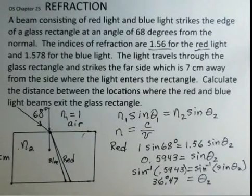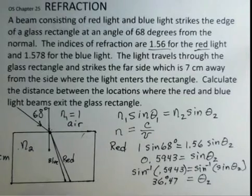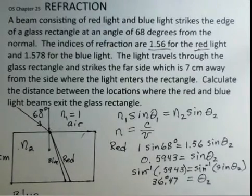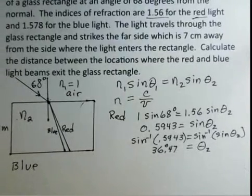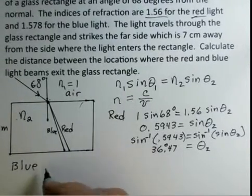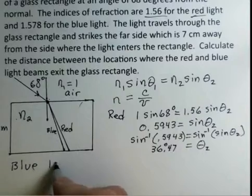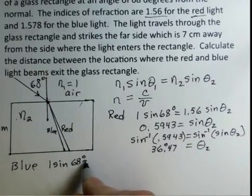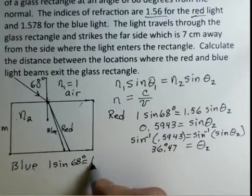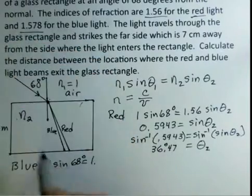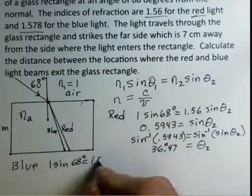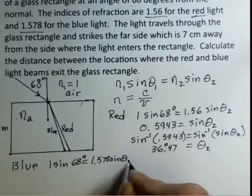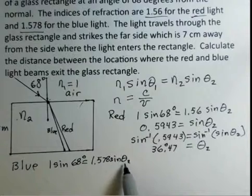For the blue, we would have the following situation. The only thing that changes is the index of refraction. For the blue, we have one index of refraction of air. Sine of 68 degrees equals now 1.578 and sine of theta 2, the angle in the glass away from the normal.